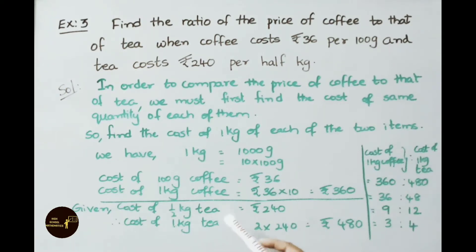Given cost of half kilo tea is 240 rupees. Therefore cost of 1 kilo tea is 2 into 240 rupees that equals to 480. Now we have to compare these two ratios. That is cost of 1 kg coffee is to cost of 1 kg tea. That is 360 is to 480.